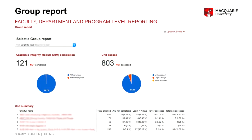We also have a group report — a very good one that we haven't widely advertised yet, but are using internally. With this report, we can generate faculty, department, or program-level reporting. We tested it with 10,000 students and it works well, showing all key information on one page. This is very good for faculty support staff, department support staff, or program-level support staff. The group report has many functionalities and the capability to group units or courses and report to relevant people.